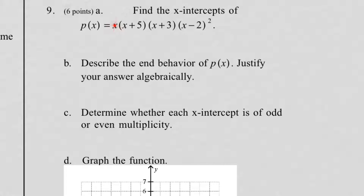Set each factor equal to 0. The very first factor is x, so x equals 0 is your first x-intercept. The x-intercepts are also known as zeros or roots. We call them zeros, roots, x-intercepts, or solutions when it's an equation — they're the same concept. So x equals 0 is the first one.